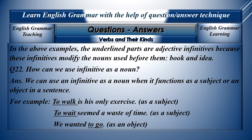Question number twenty-two: How can we use infinitives as a noun? We can use an infinitive as a noun when it functions as a subject or an object in a sentence. For example, 'to walk is his only exercise' — here 'to walk' is used as a subject. 'To wait seemed a waste of time' — 'to wait' as a subject. 'We want it to go' — here 'to go' functions as an object.